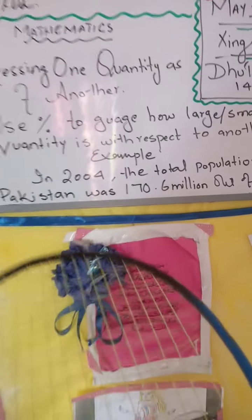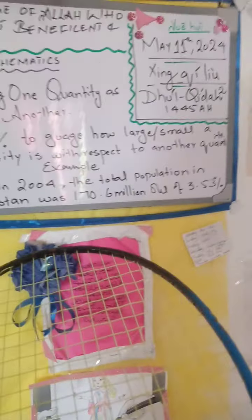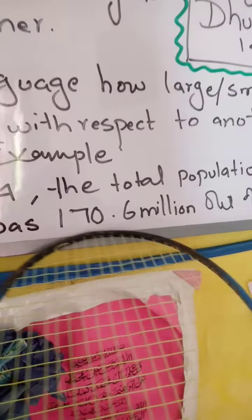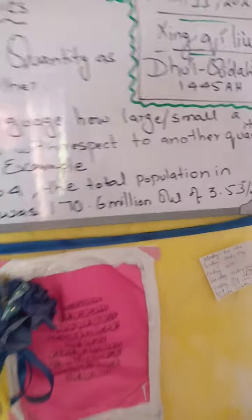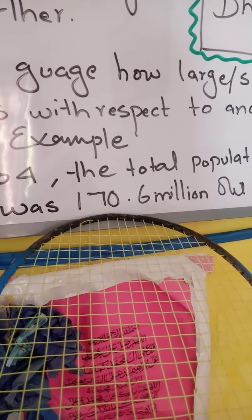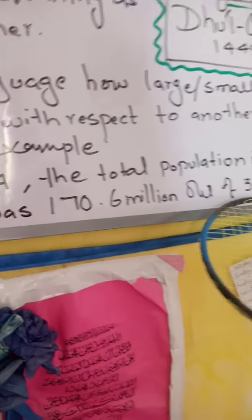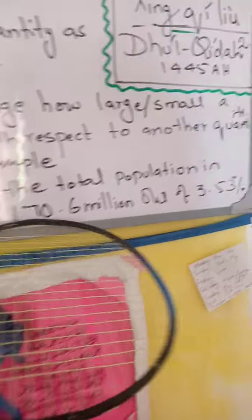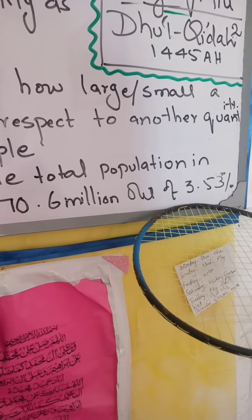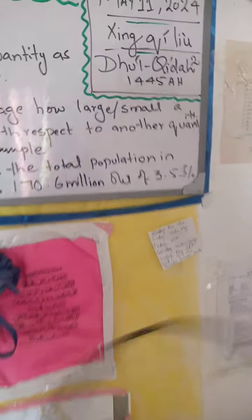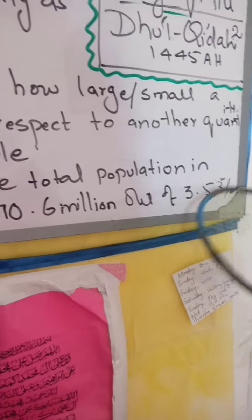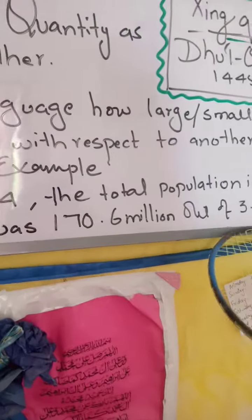For example, the total population of Pakistan in 2004 was 170.6 million. Out of this, 3.53% belonged to other religions — for example, Christianity, Hinduism, and so on. So 3.53% from this number in 2004 were non-Muslims, or belonged to another community.